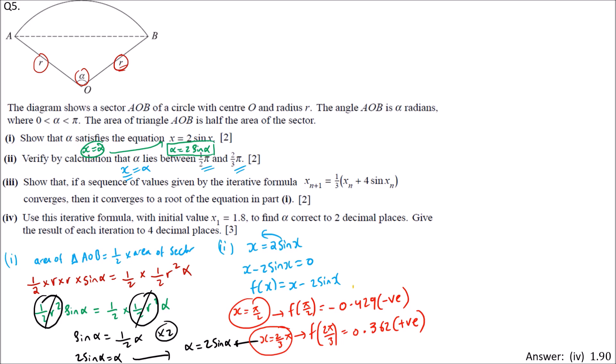Next, the conclusion: Since f(pi/2) and f(2pi/3) are of opposite signs, therefore there is a root between x equals pi/2 and x equals 2pi/3. That's the second part.